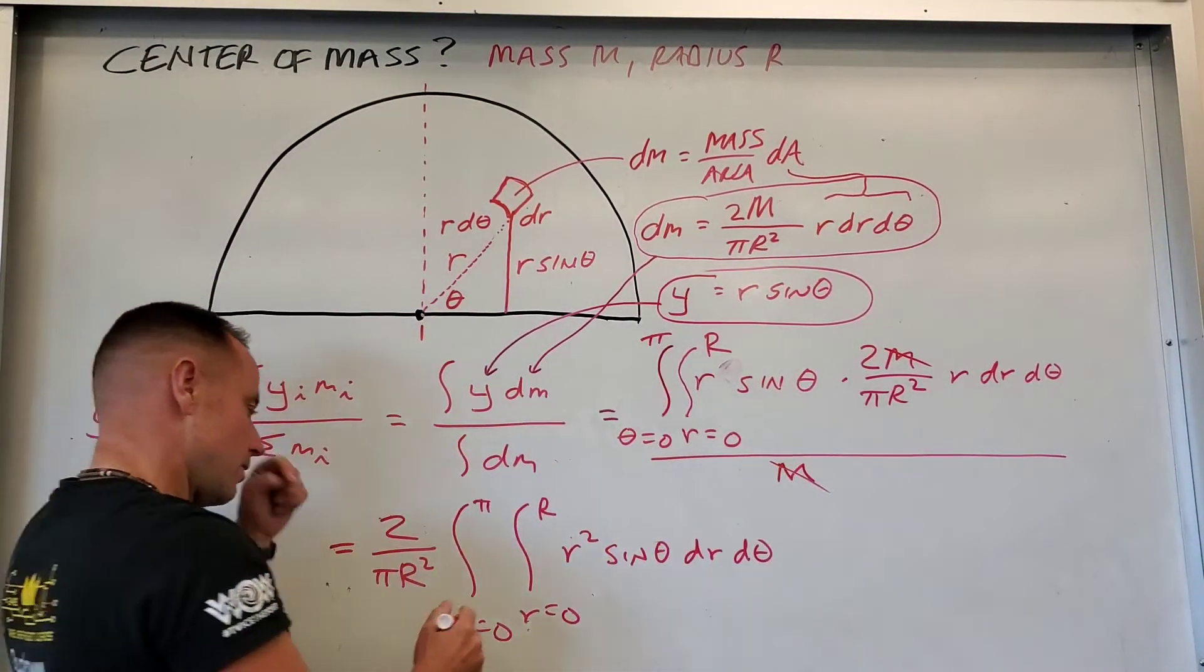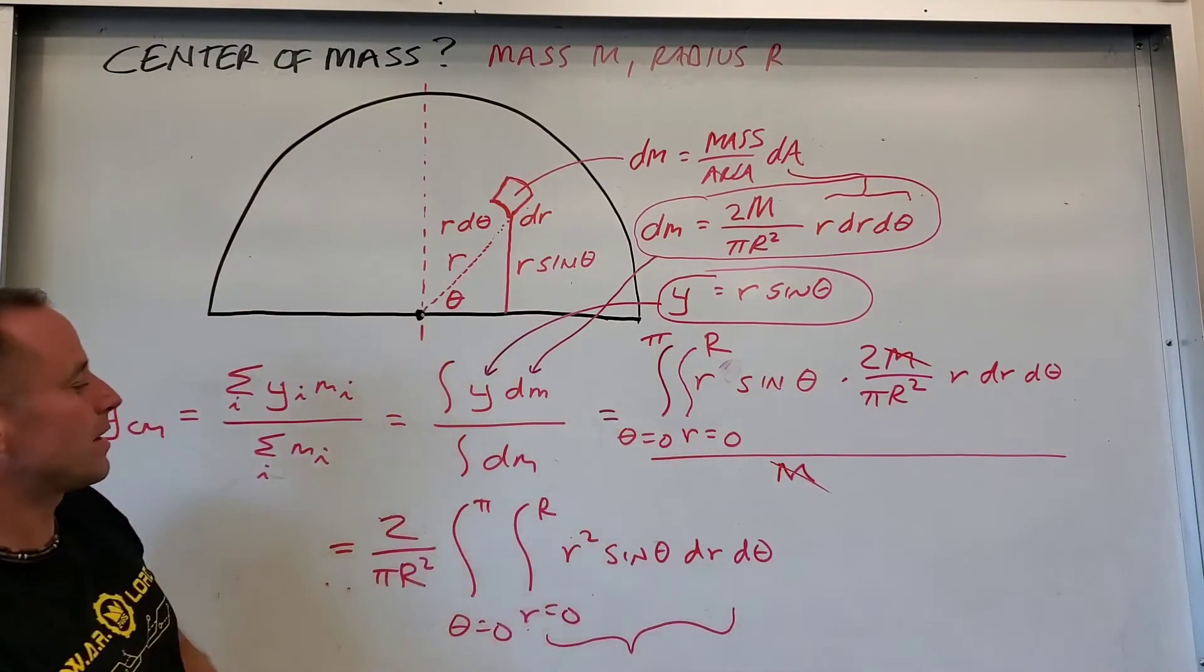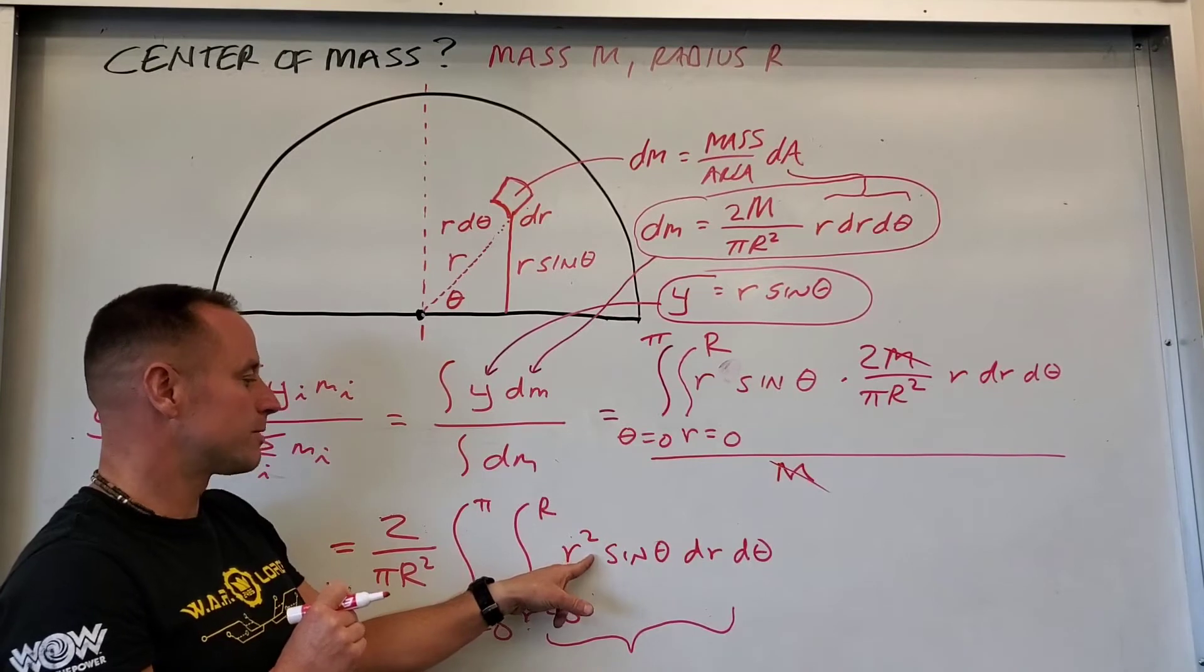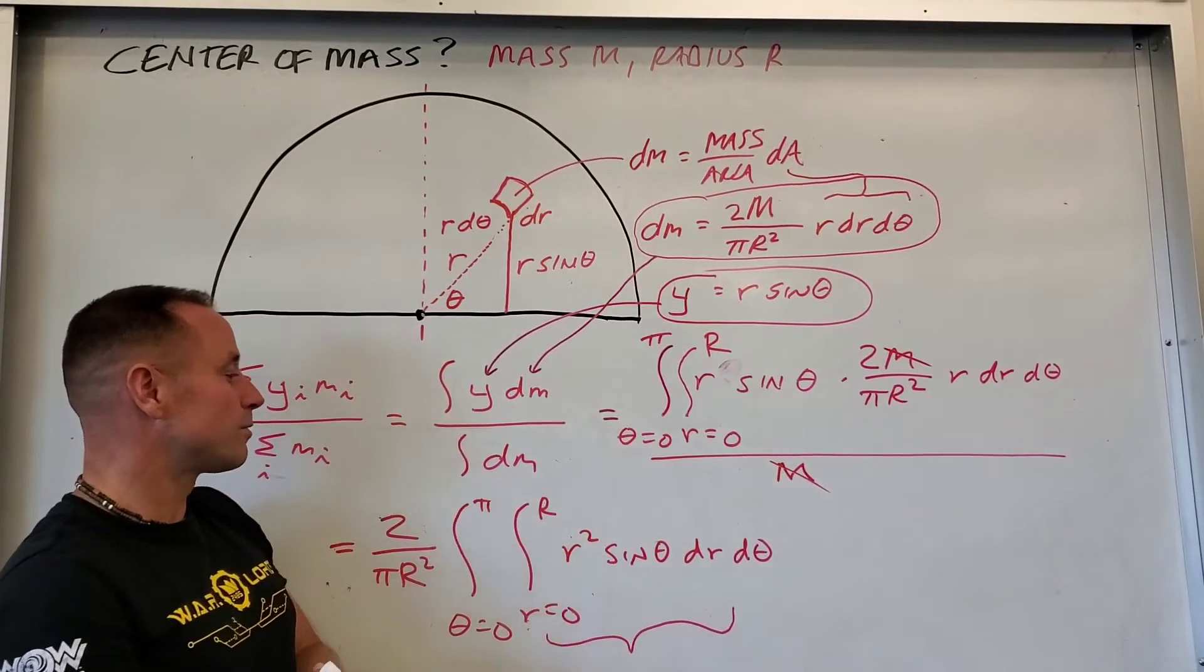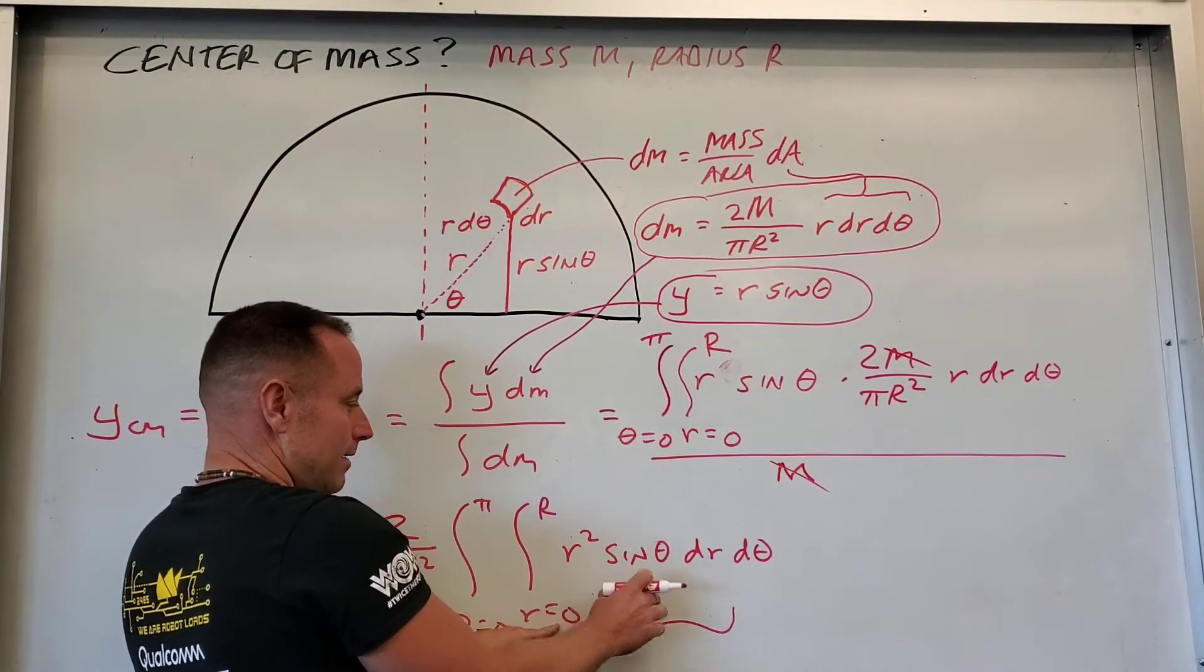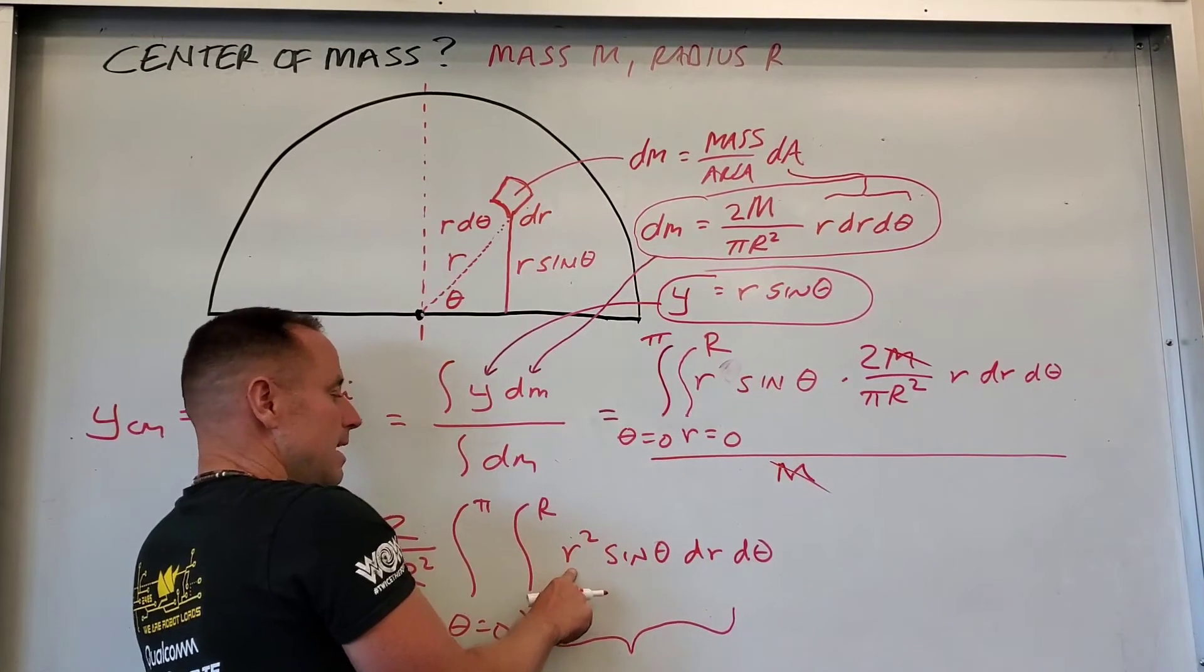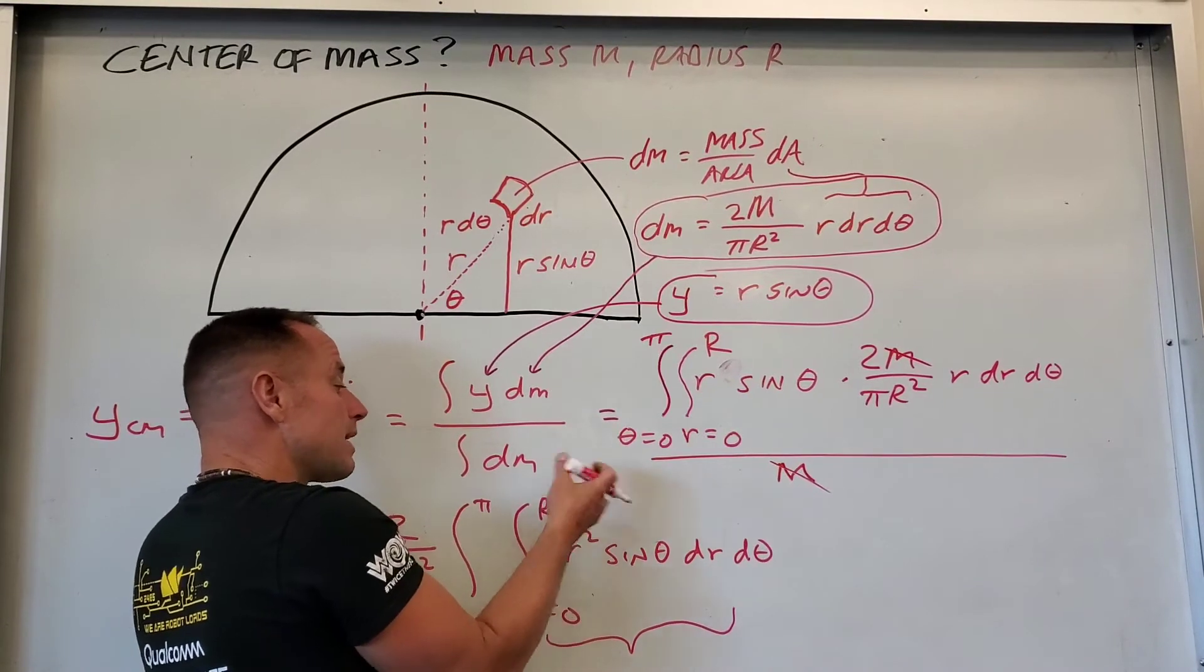If you handle the integral over r first, over the radial coordinate, which is just this part, that's just going to raise this to r cubed over 3, which would then just become a constant that would pull out in front. And then you're just going to be left with the integral over θ. So again, your integral over the radial coordinate r from 0 to big R, this is just going to become little r cubed over 3. And then you'll plug in big R and 0, which would just give you big R cubed over 3.